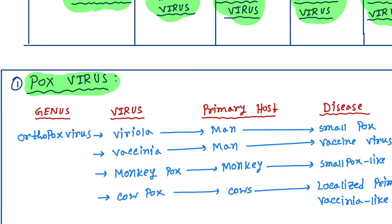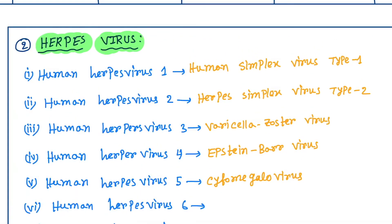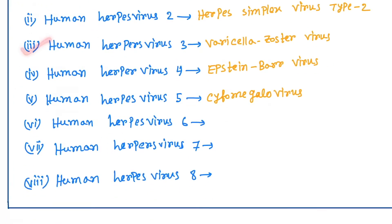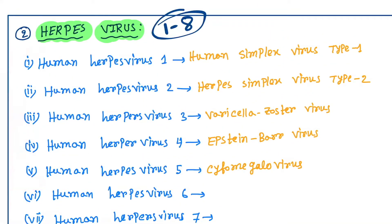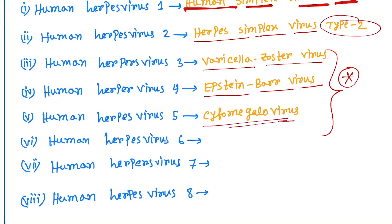Next classification is herpesvirus. We have herpes 1 to 8 — human herpesvirus 1 through 8. Human herpesvirus 1 is also known as herpes simplex virus type 1. Human herpesvirus 2 is herpes simplex virus type 2. Human herpesvirus 3 is varicella-zoster virus — these three are important. Human herpesvirus 4 is Epstein-Barr virus and human herpesvirus 5 is cytomegalovirus.